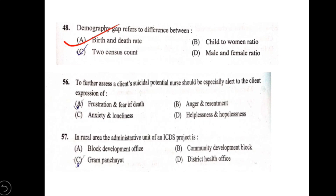Question 56: to further assess a client's suicidal potential, a nurse should be specially alert to the client's expression of — options: A) frustration and fear of death; B) anxiety and loneliness; C) anger and resentment; D) hopelessness and helplessness. Hopelessness and helplessness represent the highest level of depression and are most associated with suicidal potential. Option D is correct.